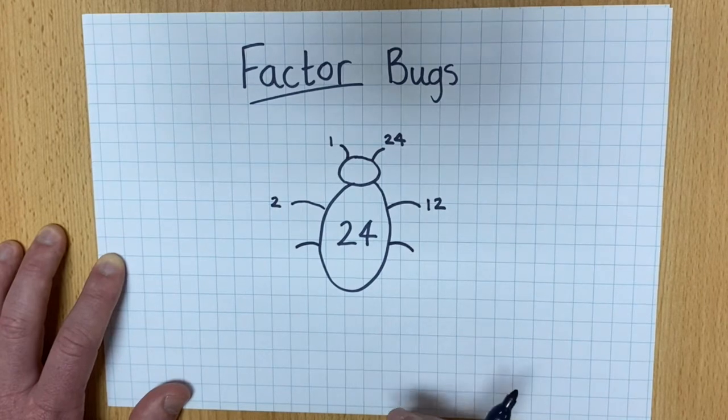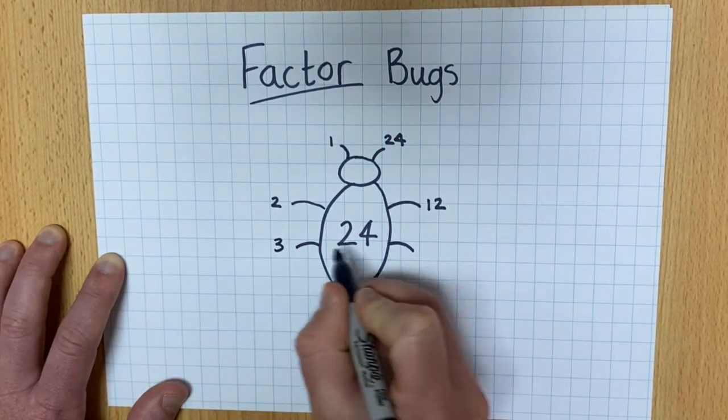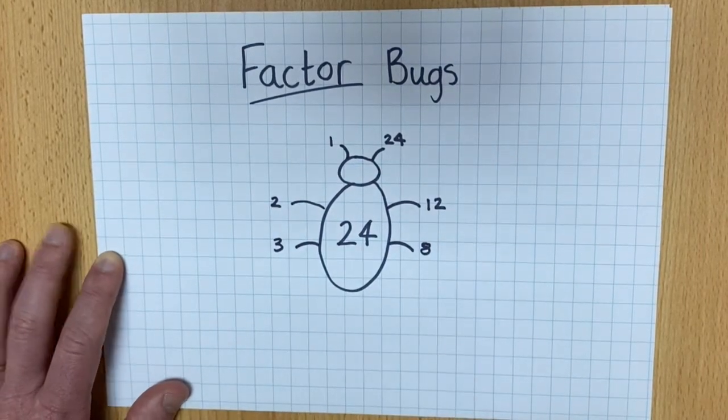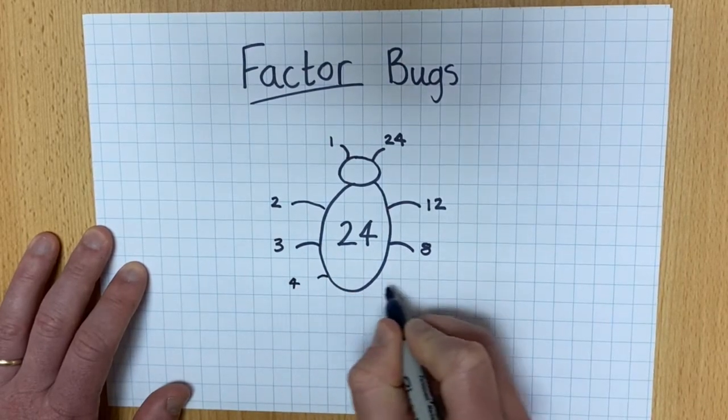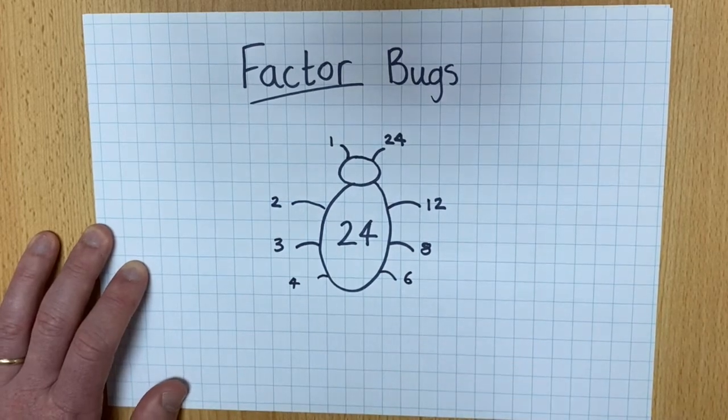What other numbers multiplied together to make 24? Well, I know that 3 times 8 makes 24. What else? 4 times 6 makes 24.